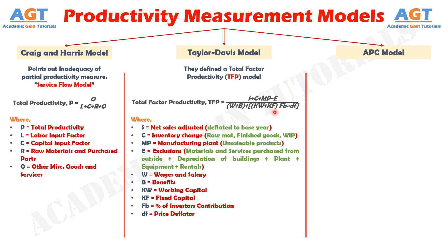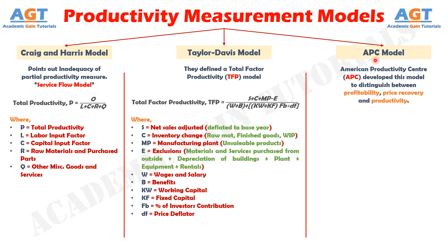The third Productivity Model is the APC Model. The American Productivity Center (APC) has developed a comprehensive measure which distinguishes among profitability, price recovery, and productivity. It can be utilized to measure productivity changes in labor, materials, energy, and capital. It also measures the corresponding effect each one has on profitability.